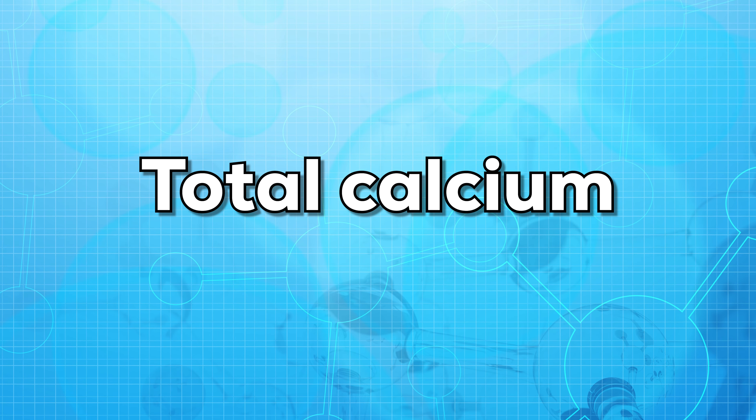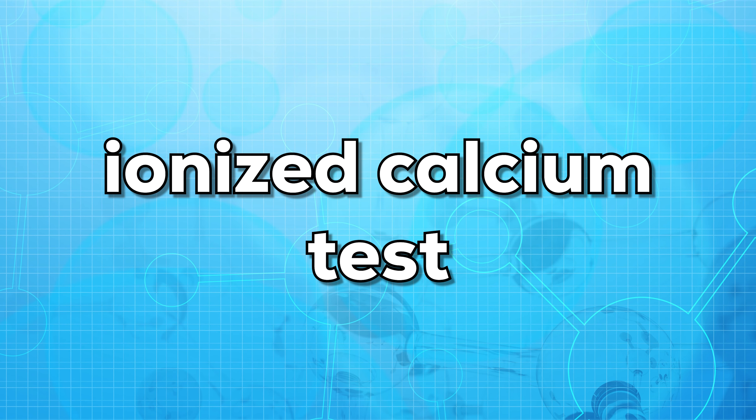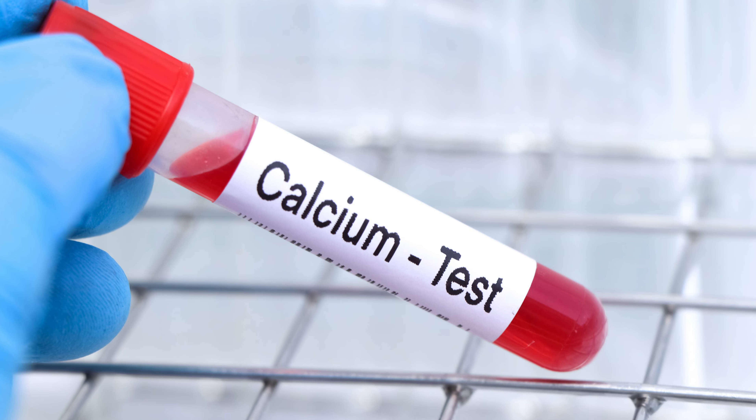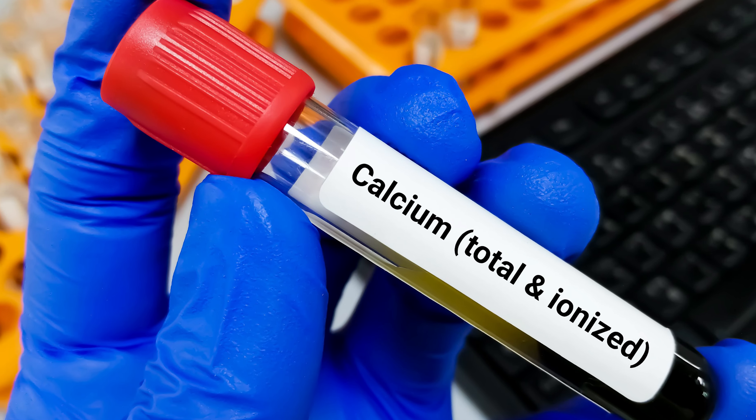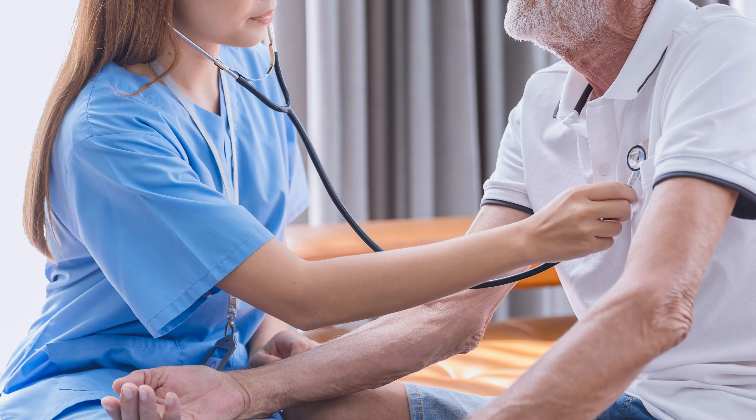Now, let us know what this test is used for. There are two types of calcium tests. One is total calcium and the other one is ionized calcium test. Total calcium test looks for calcium levels which is specific to a protein. Ionized calcium test looks for unattached or free calcium that is not attached to any of the proteins. Most of the times, total calcium test is a part of normal health routine checkup.